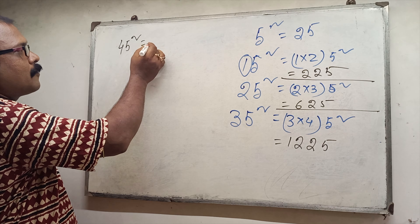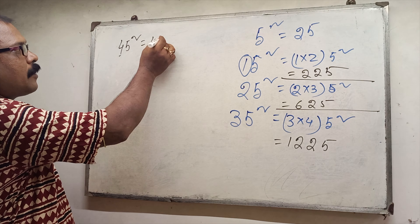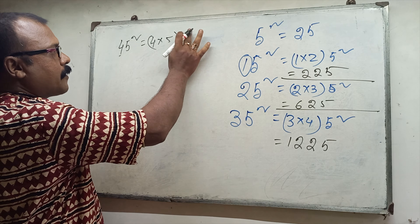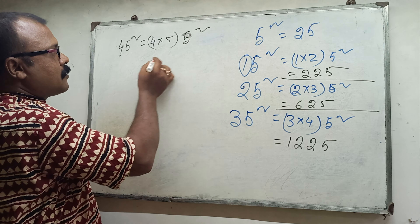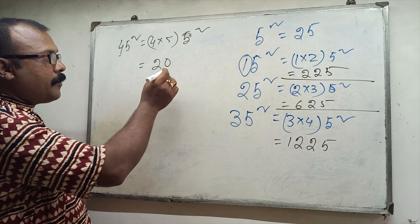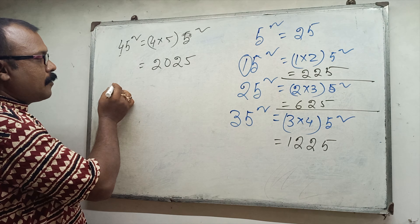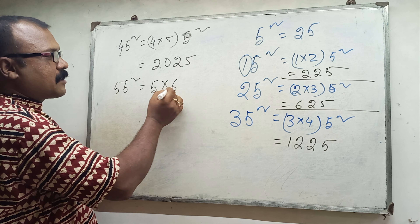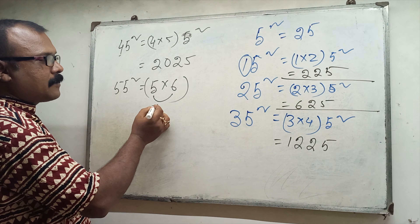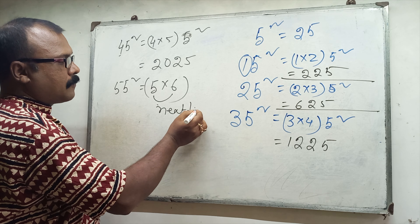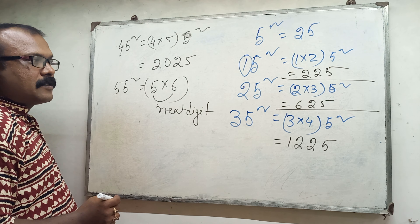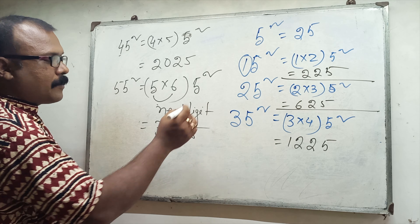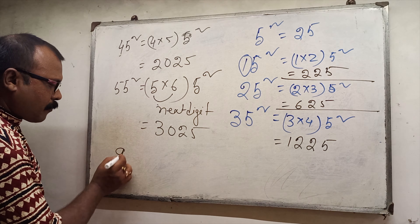So 45 squared: 4 into 5, and 5 squared. First digit 4, next digit 5. 4 into 5 is 20, and 25 — so 2025. So 55 squared: 5 into 6, and 5 squared. So 30 and 25 — so 3025.